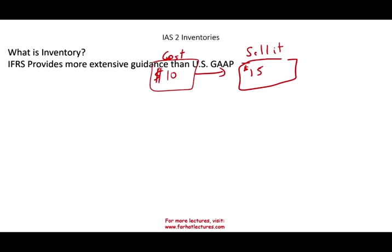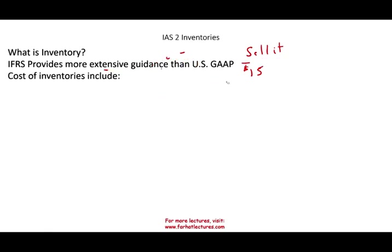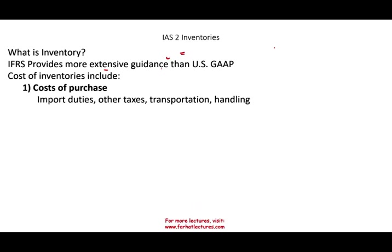Now we have to understand that IFRS provides more extensive guidance than US GAAP — they go into more detail on how they cover inventories. What would the cost of inventories include for IFRS? Well, it includes the cost of purchase, obviously how much it costs you, plus any import duties. If you buy something from overseas you might have to pay taxes, transportation to get that inventory to your warehouse, and handling costs. All of these are considered costs of your inventory.